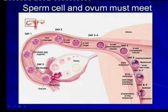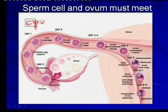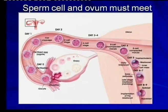The blastocyst forms, as we looked at last week. Now it is ready for the process of implantation — implantation of the blastocyst takes place in the uterus.